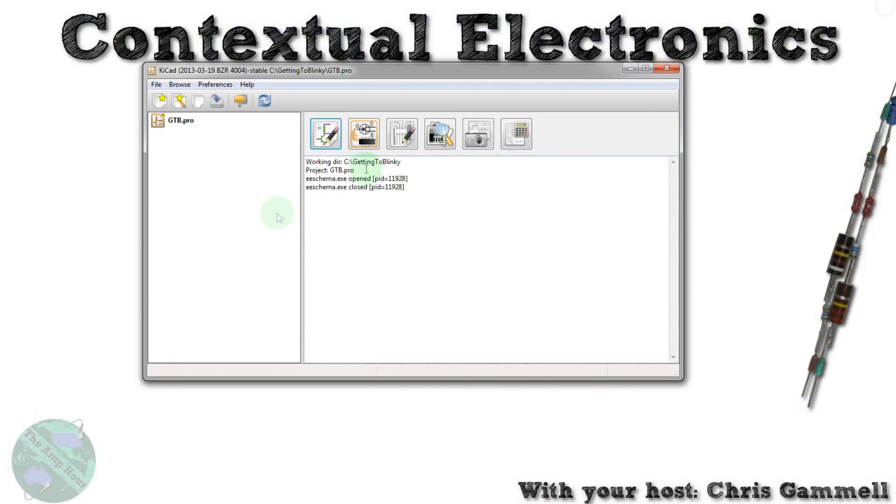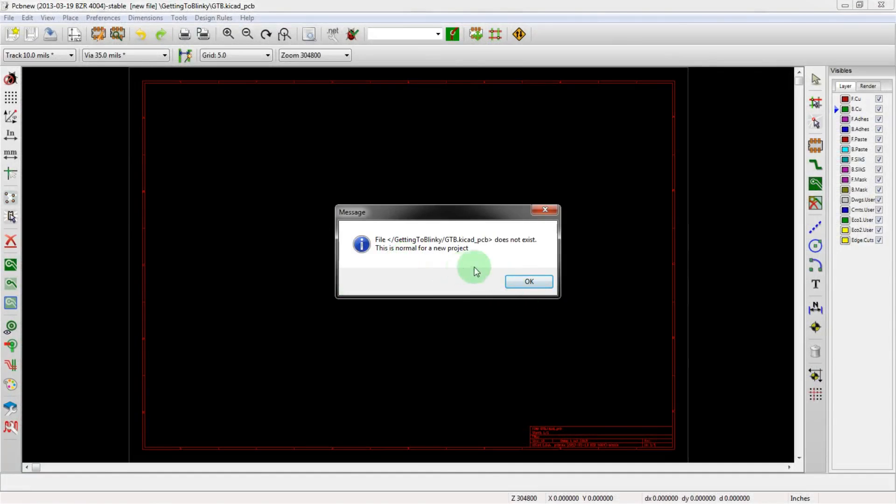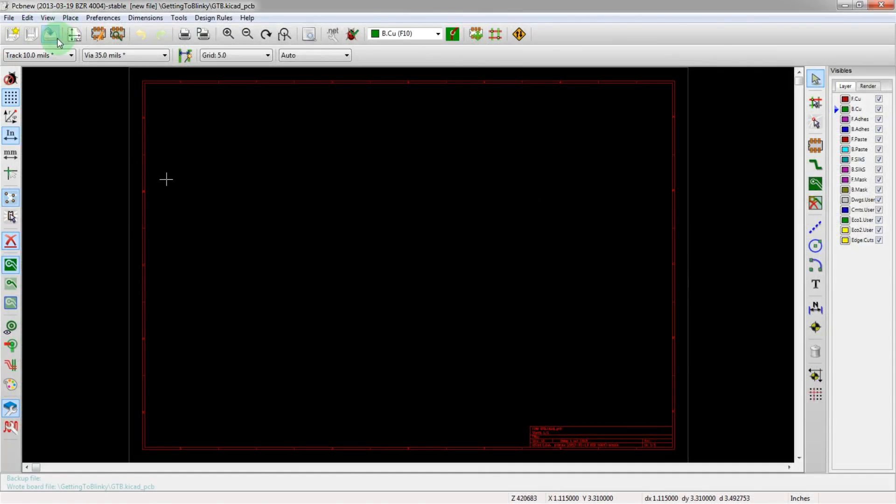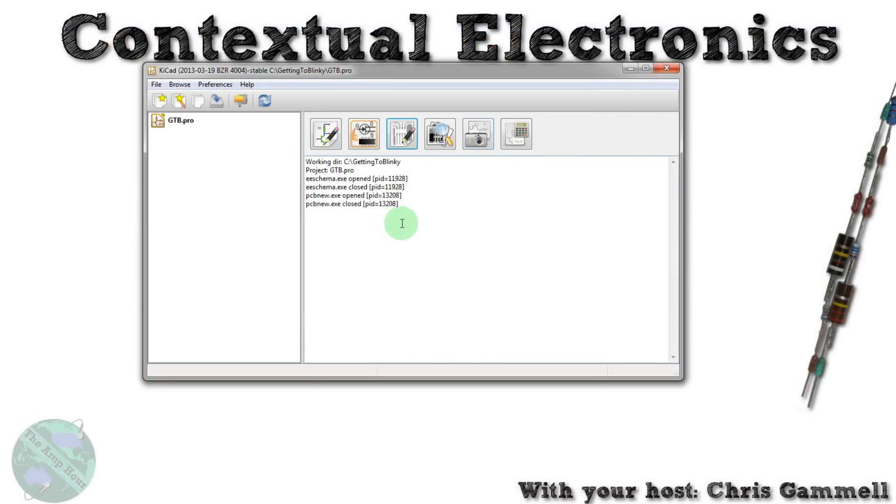Let's also create a, this is the PCB new. This is going to be where we do our layout. It doesn't exist yet because it's a new project. So hit yes. Save. And then we are good to go. All right. So that's kind of all we need to do for the Getting to Blinky starting part one video. More in part two. And we start actually putting together the circuit.